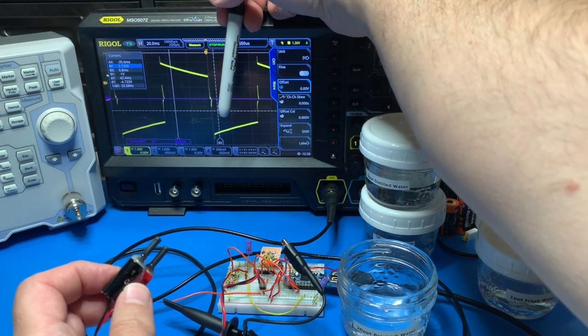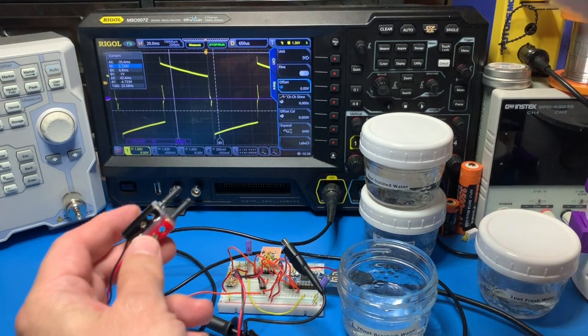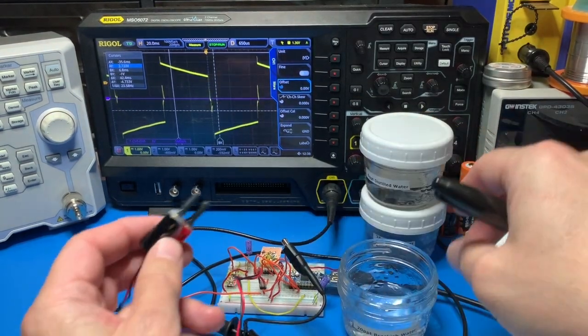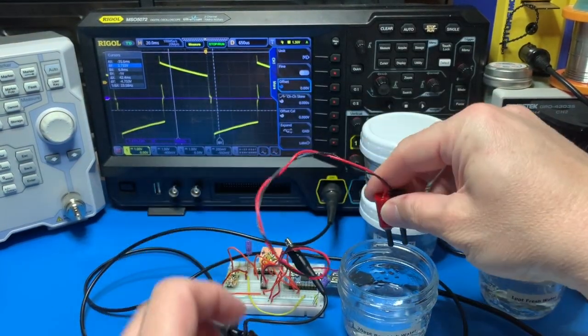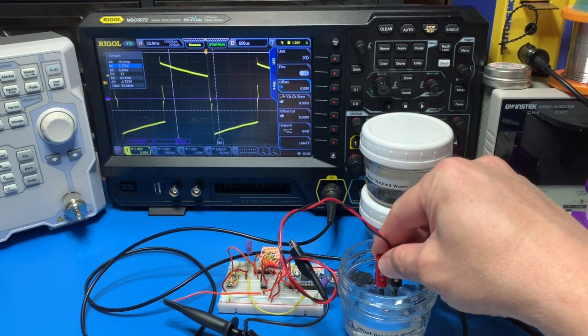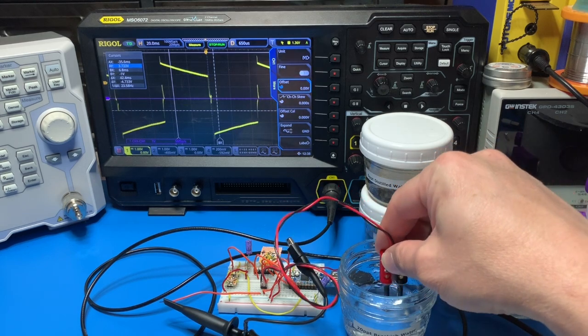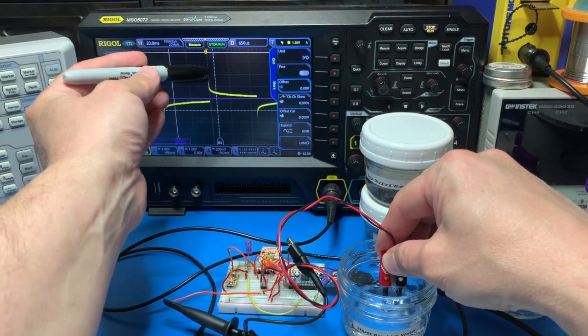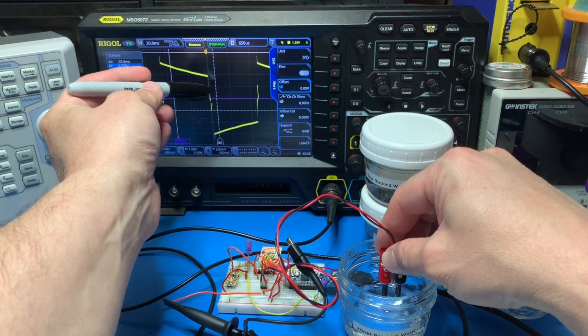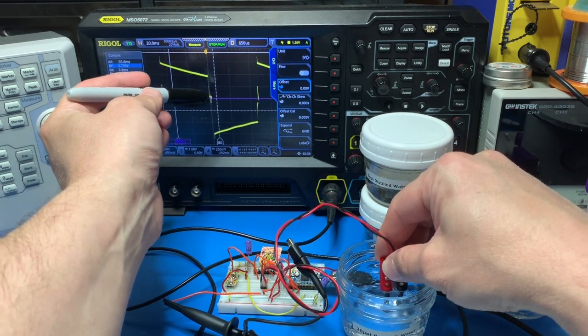And then you'll see as I dip this in the brackish water sample here, as I dip it in the sample, you see that waveform changes. You can see now basically that waveform is now becoming a lot sharper because there's more conductivity in the liquid.